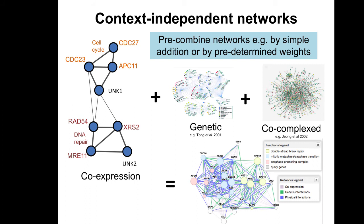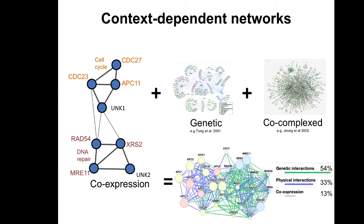To recap: a context-independent network collects all the data, takes a weighted sum — the edges in the final combined network are a weighted sum of all edges seen between pairs of genes. STRING uses a context-independent network. These networks have no information about tissue specificity or the context of your query. A context-dependent network instead takes a weighted sum where some networks get high weight and others get zero weight, so their information doesn't contribute at all.